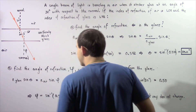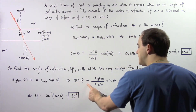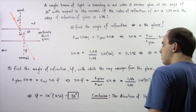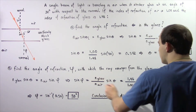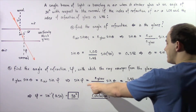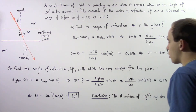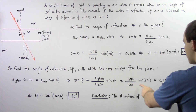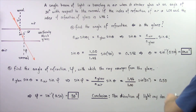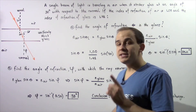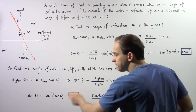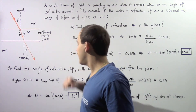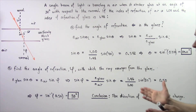Rearranging and solving for sine phi: sine phi equals the index of refraction of glass divided by the index of refraction of air, multiplied by sine theta. The index of refraction of glass is 1.46, air is 1.00, and angle theta was calculated in Part A to be 20 degrees, so sine of 20 degrees gives us 0.5. Taking the inverse sine of 0.5 gives us approximately 30 degrees. So angle phi equals 30 degrees.